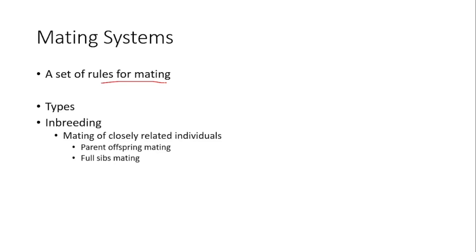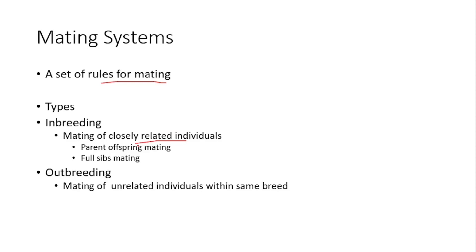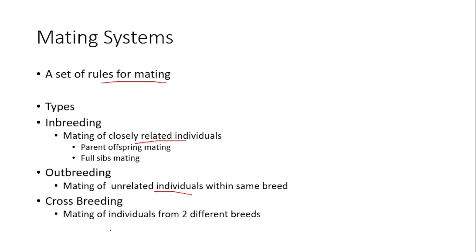Inbreeding can be defined as the mating of closely related individuals — for example, the mating of parents with offspring or the mating of brother and sister. Outbreeding is the mating of two unrelated individuals within the same breed. Crossbreeding involves crossing individuals from two different breeds; for example, crossing individuals from Sahiwal cattle with Cholistani cattle. The offspring produced from this cross would be a hybrid or crossbreed individual.